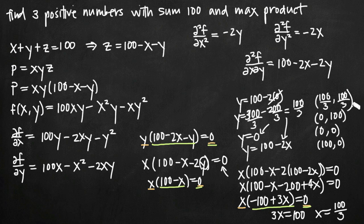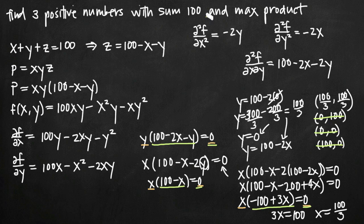We've now generated four potential critical points. However, the problem asks for three positive numbers, and zero is not a positive number. So the critical points (0, 0), (100, 0), and (0, 100) are all eliminated because they contain zero values. That means the only critical point we can investigate is (100/3, 100/3).